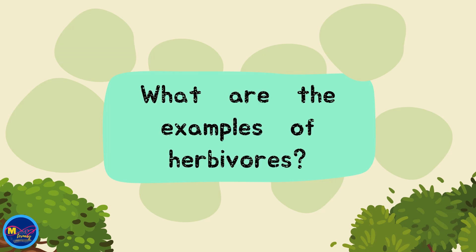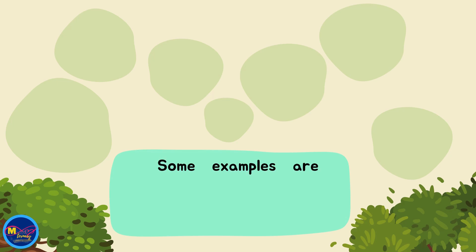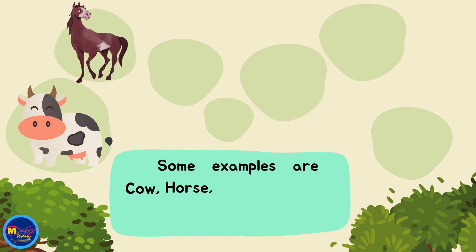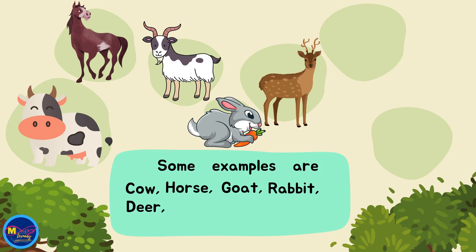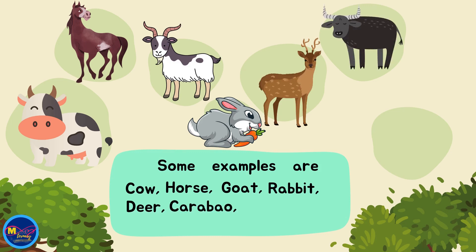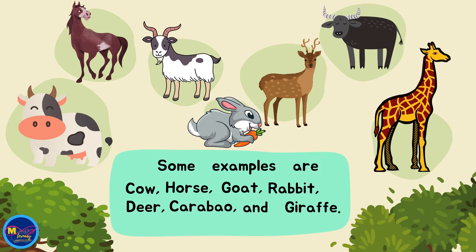What are the examples of herbivores? Some examples are cow, horse, goat, rabbit, deer, carabao, and giraffe.